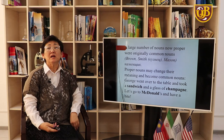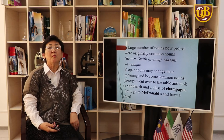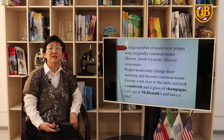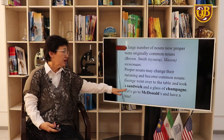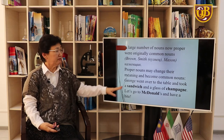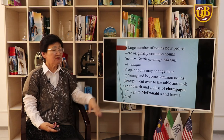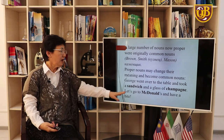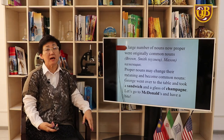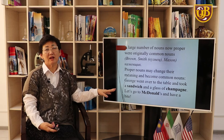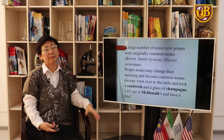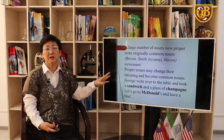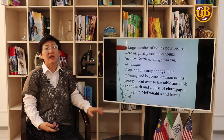For example, 'Brown' is a color, 'Smith' is a profession, 'Mason' is another profession. Proper names may change their meaning and become common nouns, and vice versa. For example, 'sandwich' is named after a person who invented it, and 'champagne' is a region in France where a certain sort of wine was produced. 'Let's go to McDonald's and have a bite' — McDonald's is a cafe named after the person who created it, and now it is a common noun.